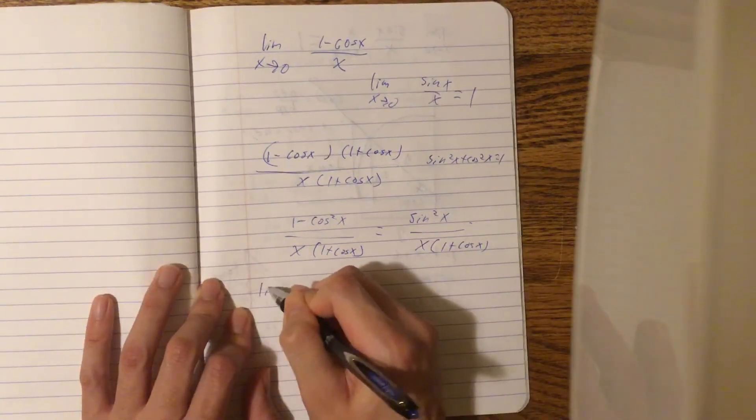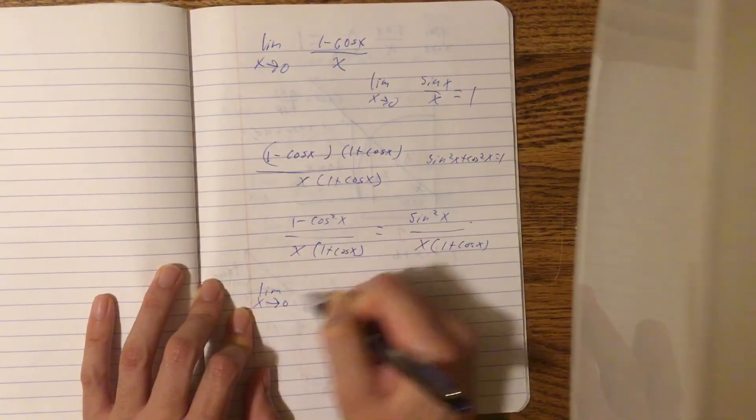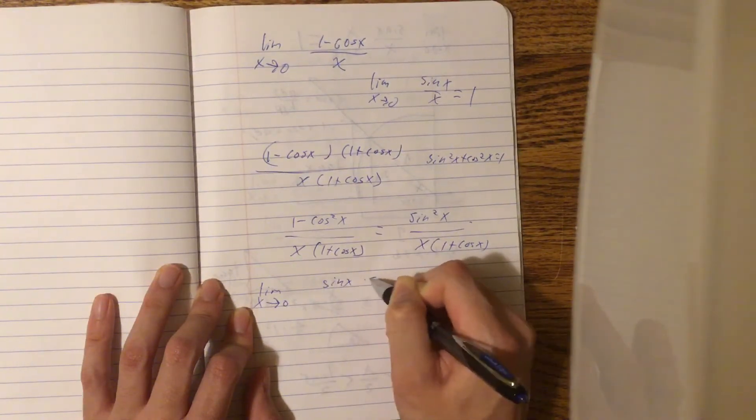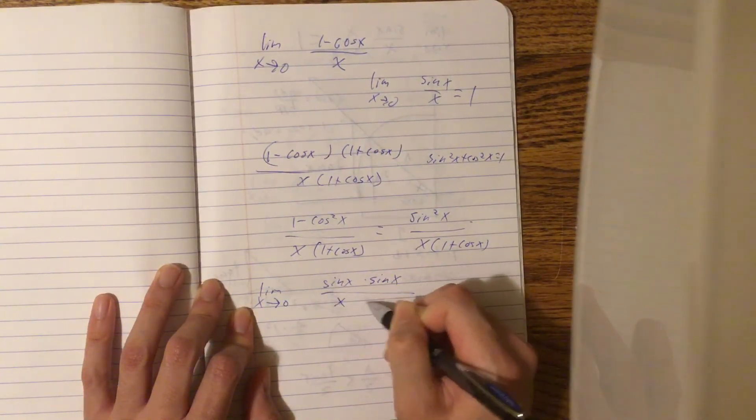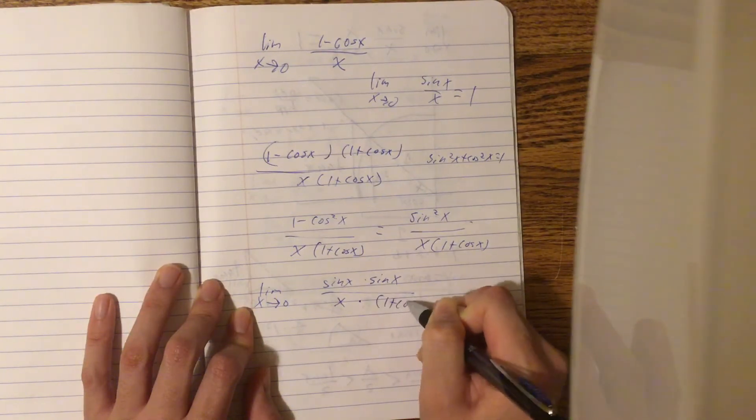And then finally we get this: limit as x approaches 0 of (sin x × sin x)/(x × (1 + cos x)).